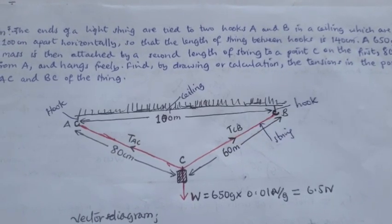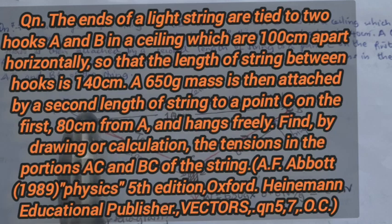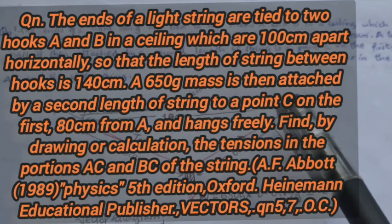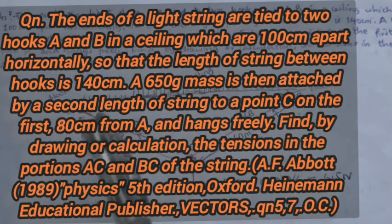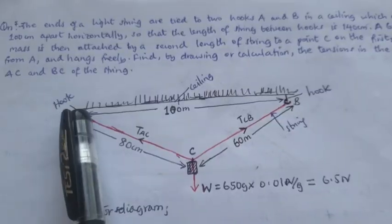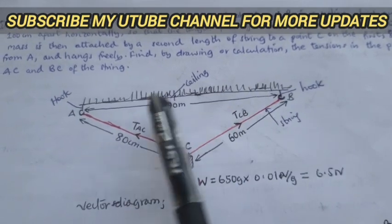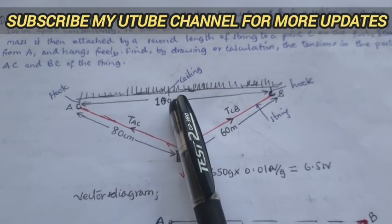We have given a question below. We have two hooks, the hooks A and B, and we have given the strings that are tied from the part A to part B. Between two hooks, we have 100 meters long.